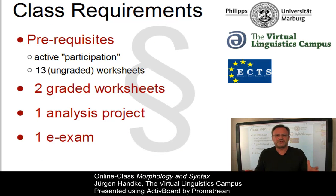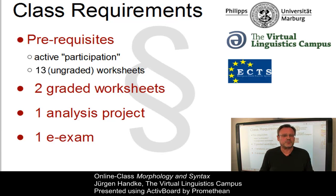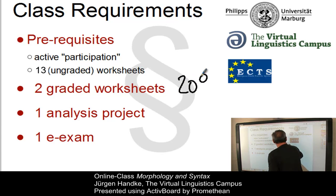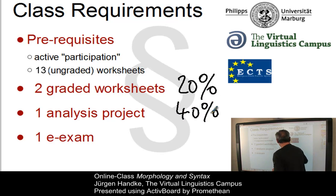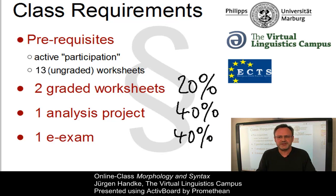Finally, you want to know what you have to do in order to get the class credits. In this class you will get six class credits, where one credit is the equivalent of about 30 hours of workload. A central prerequisite is that you actively participate. In an online class, this means go online, study the content and the videos, and do the 13 ungraded worksheets as well as the practicals. Your final grade will be calculated on the basis of two graded worksheets that make up 20% of the final grade, an analysis project that makes up 40% of the final grade, and an e-exam which makes up the remaining 40% of the final grade.